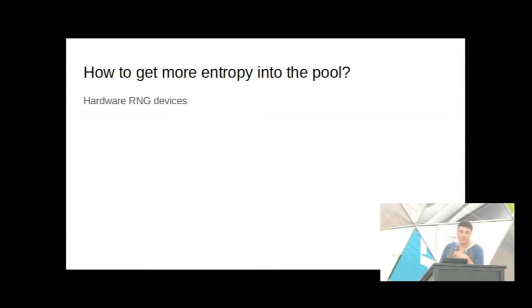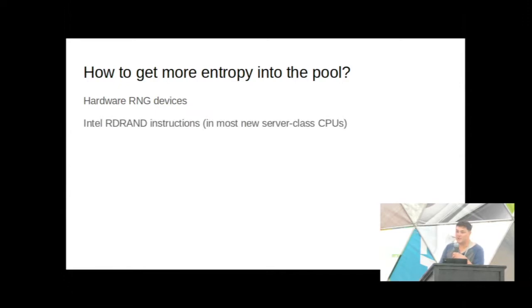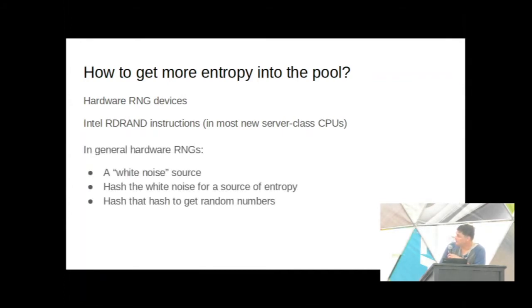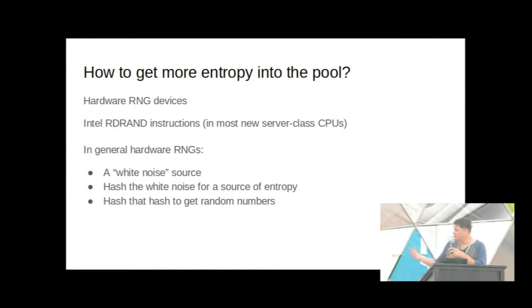If you really want to use /dev/random, how do you get more entropy into the pool so you don't deplete it? There are hardware RNG devices. Until a few years ago they were uncommon — you had to buy one from Cavium. But Intel released RDRAND instructions, available in most server-class CPUs — you can check /proc/cpuinfo for it. These generate gigabits per second of entropy using hardware. Usually it's some sort of white noise source, hashed to produce random numbers.